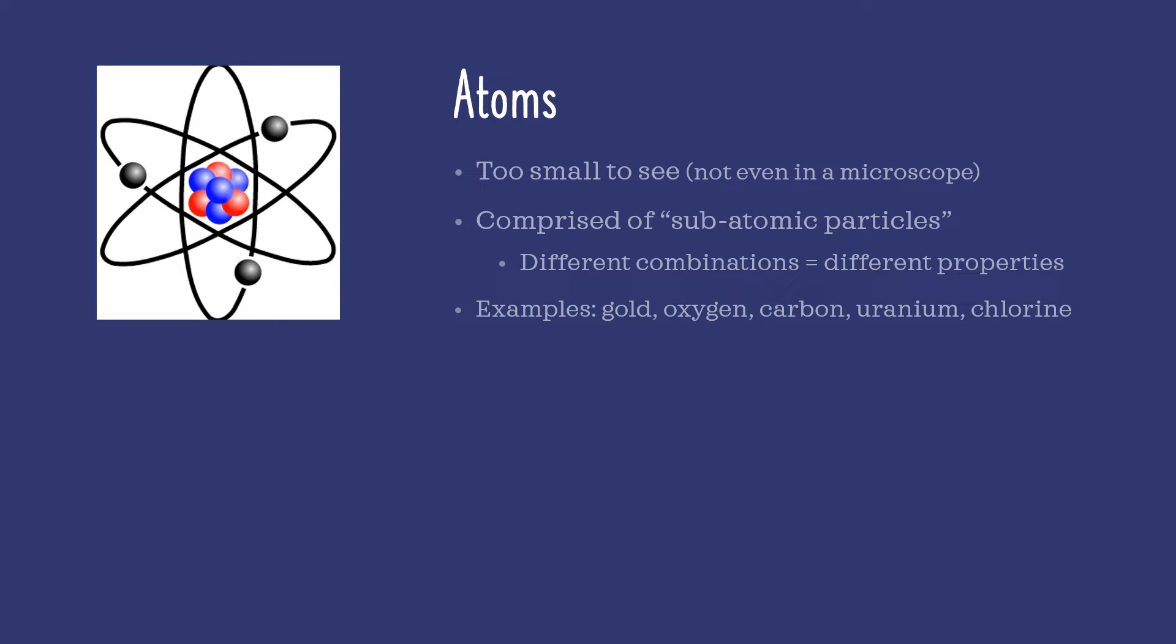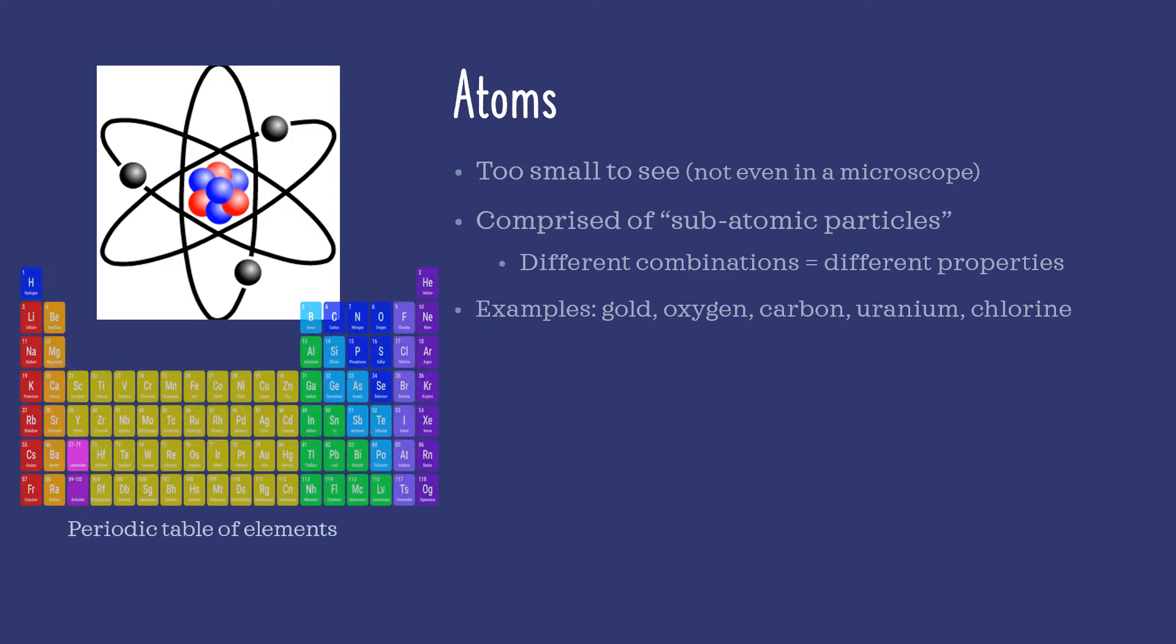Each element on the periodic table is a type of atom, each with its own unique attributes.